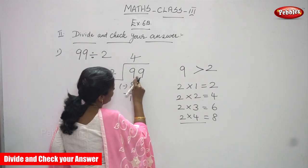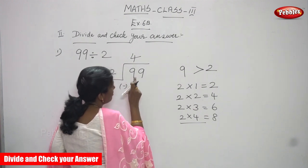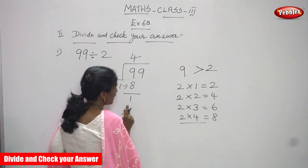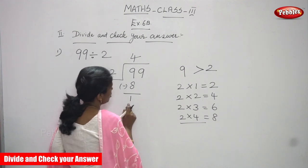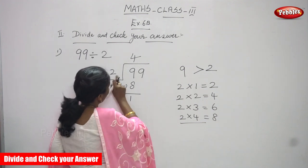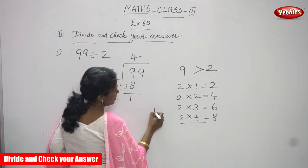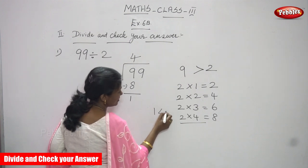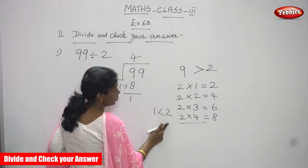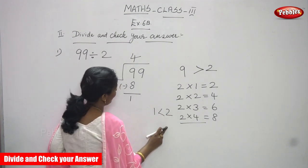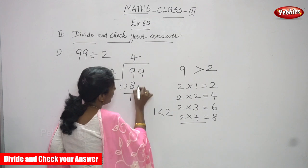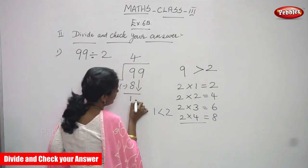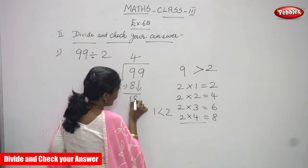From 9 you have to subtract 8. So 9 minus 8 equals 1. Now compare 1 with the divisor 2 — 1 is less than 2, so it is not enough to divide. You have to bring down the next digit, which is 9.